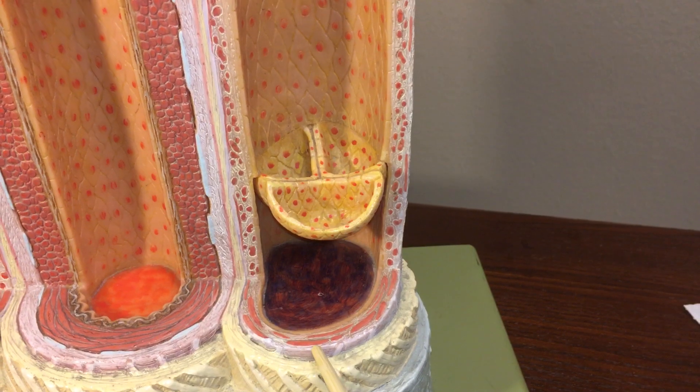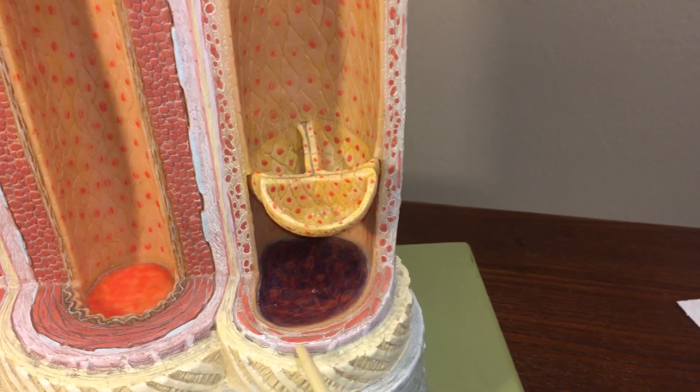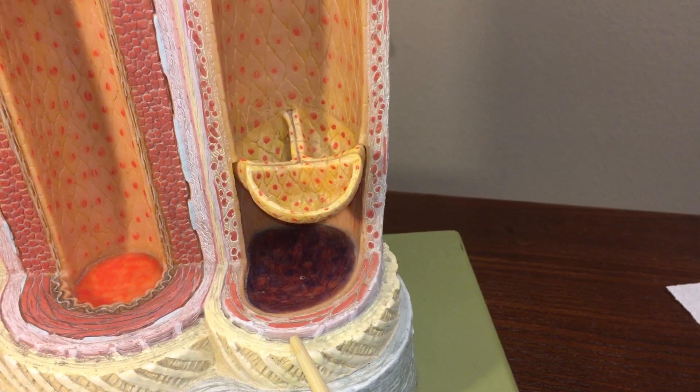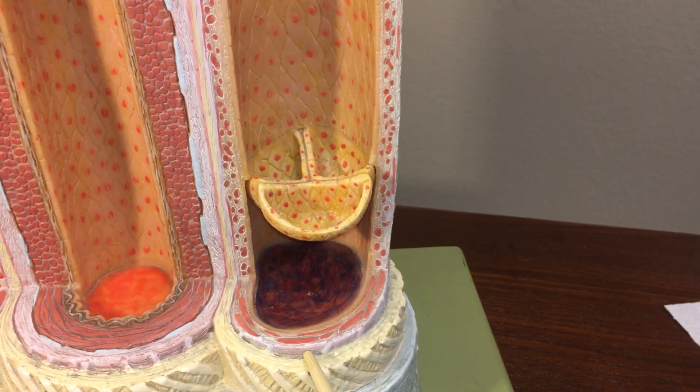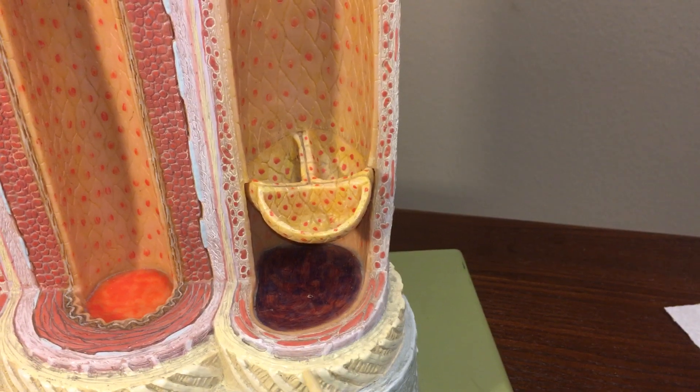And then there's no external elastic lamina or anything like that. It just now starts to blend into the adventitia or tunica externa. And you'll have fibrous and areolar connective tissue here, that pink and yellow.